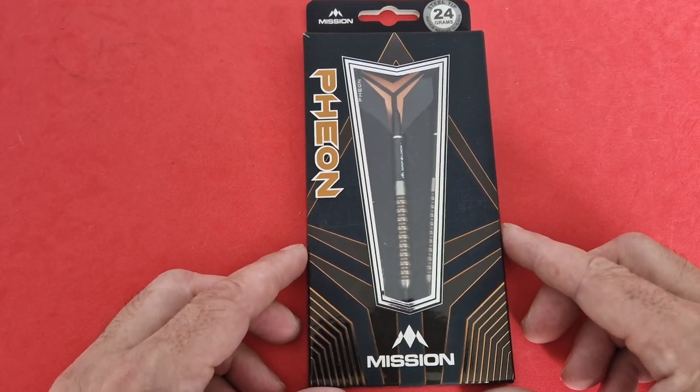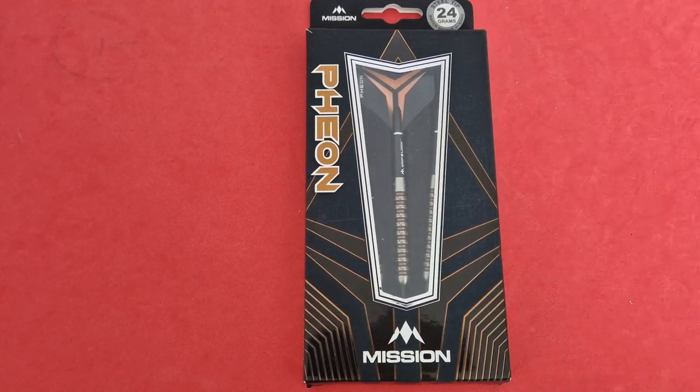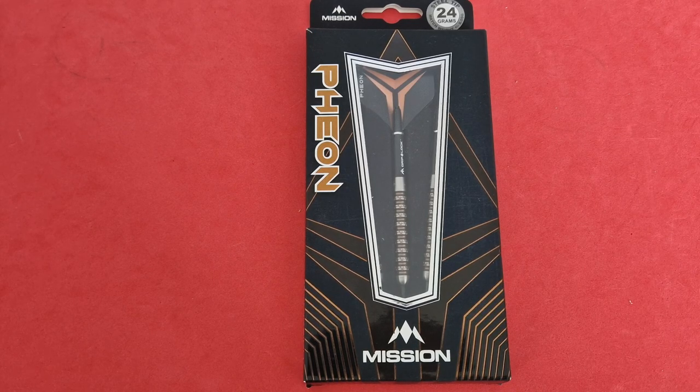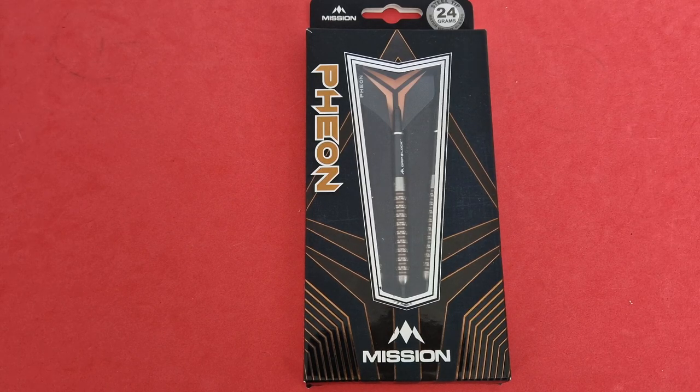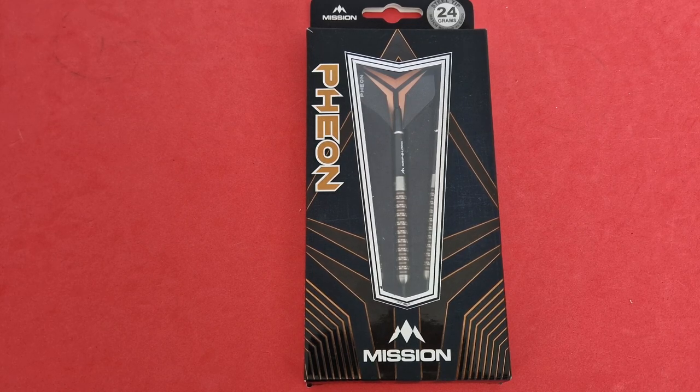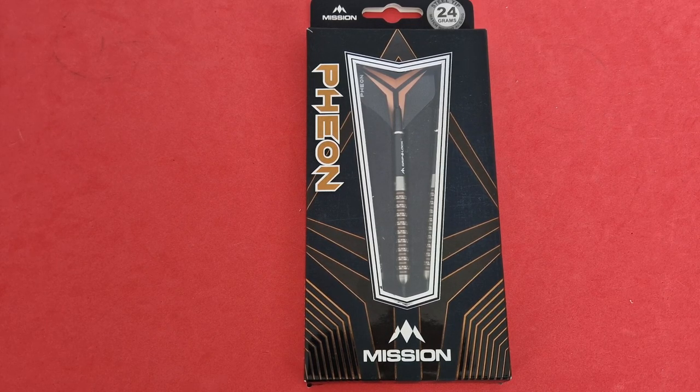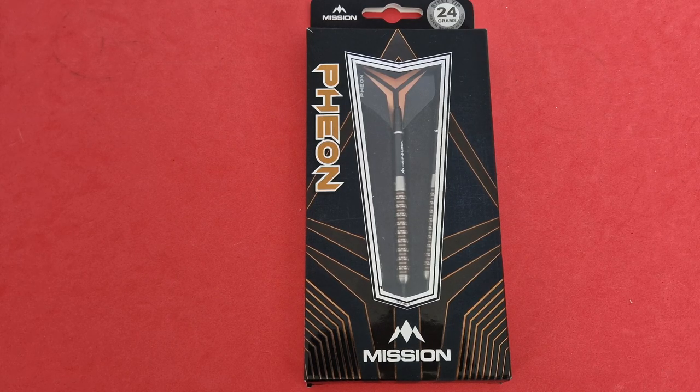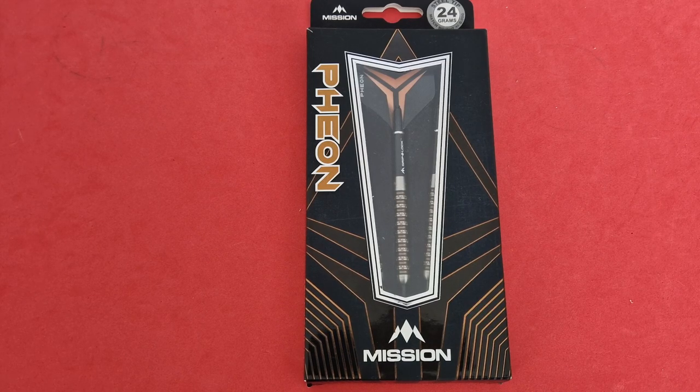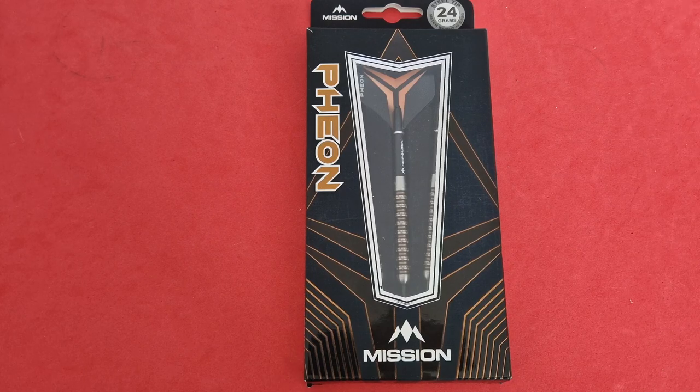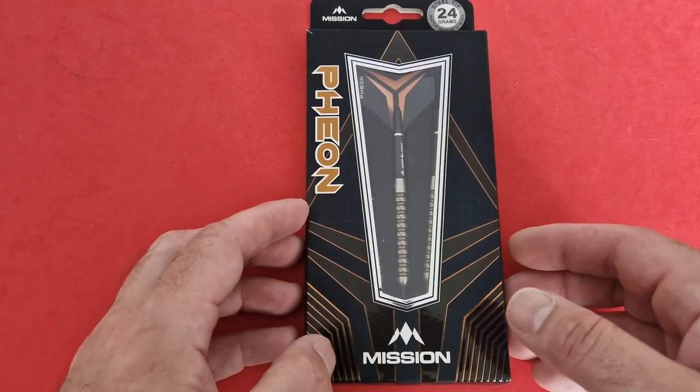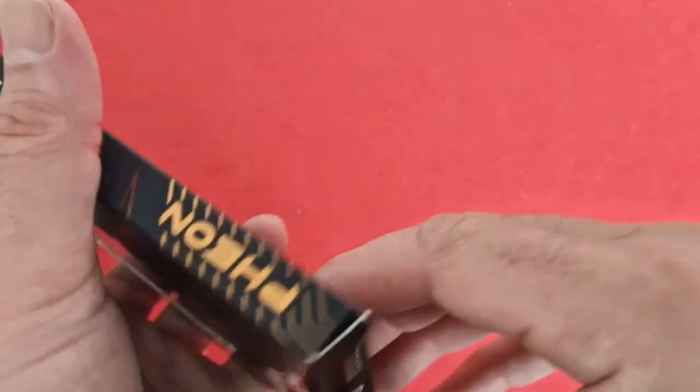These darts were given to me by Neil's Darts but they are available to purchase from Darts Corner. They come in three different weights: 22 grams, 24 grams and 26 grams. They are 57 pounds and 95 pence. The dimensions for the 22 grams would be 6.5 diameter by 48 millimeters long, the 24 would be 6.8 millimeter diameter by 48 long, and the 26 gram is 7 millimeter diameter by 48 long. So they are only jumping up in diameter, they are not jumping up in length at all.